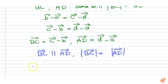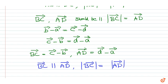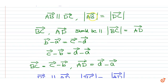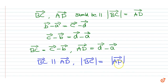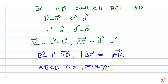Therefore, we have proved that AB and DC are parallel, and BC and AD are parallel, and the magnitudes of the opposite sides — that is AB and DC are equal, and BC and AD are equal. Therefore, we have proved that ABCD is a parallelogram. That is our proof.